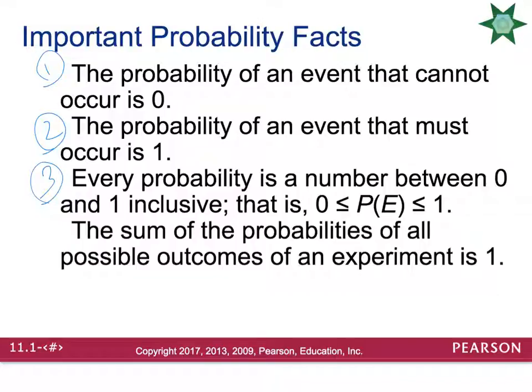Next, every probability is going to be a number between zero and one. So your lowest probability possible is zero, and you can have any probability in between 0.1, 0.15, 0.99, all the way up to one. So it has to be between zero and one. And then last, if you take all the probabilities of each event and add them all together, they should add up to equal one.